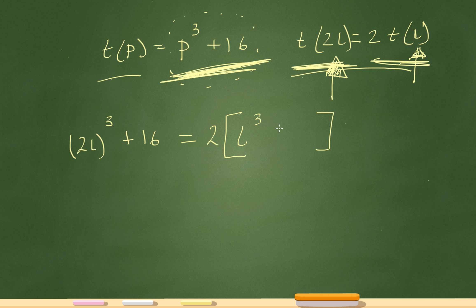So replace the p with the l. So it'll be l cubed plus 16. So instead of the p, I replace that with the l, because that's what was inside the parentheses. But I have to multiply the whole function of t by 2. So that's where I got that 2 from. And now it's starting to look a little more like an algebraic expression that I have to solve.